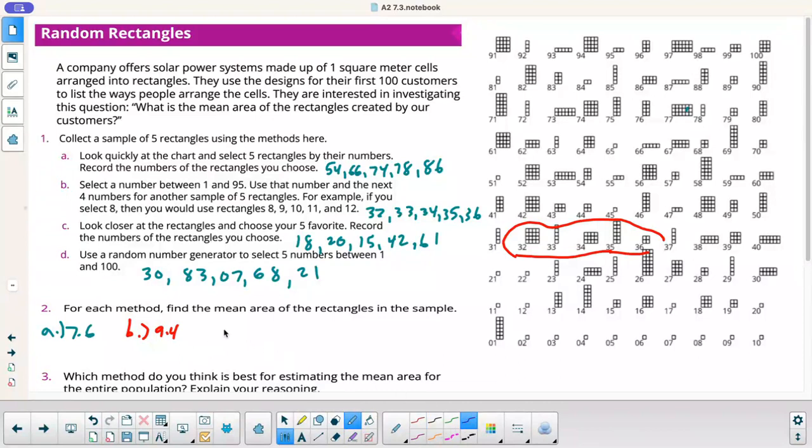Let's go to C. I had 18, so that was 9. 20, that's 1. 15, that's 4. 42, that's 16. And then 61 is 16 as well. So I got 46 divided by 5 is 9.2. And let's go to D.